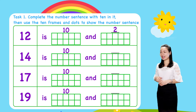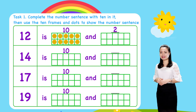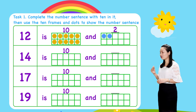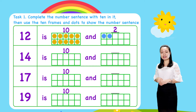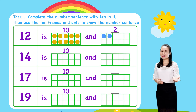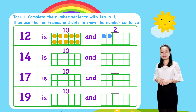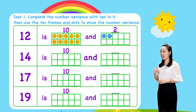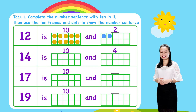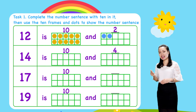Draw 10 dots in the ten frame to represent number 10. Then, draw 2 more dots to represent number 2. Next, 14 is 10 and 4. Number 14 is decomposed into 10 and 4.